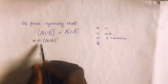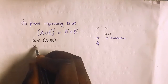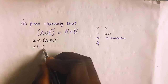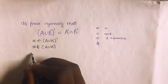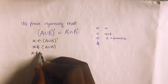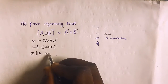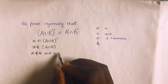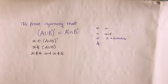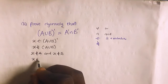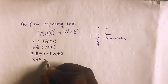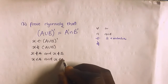Therefore, if x is a member of (A union B) complement, that shows that x is not a member of A union B. Since x is not a member of A union B, that means x is not a member of A and x is not a member of B.